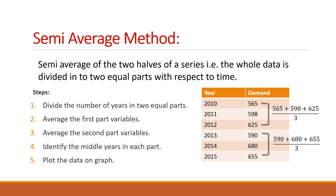Next, we have to identify the middle years of each part. In the first part, the middle year is 2011 — that is, for 2010, 11, and 12, the middle year is 2011. In the second part, the middle year is 2014 — that is, for 2013, 14, and 15, the middle year is 2014. Then we have to plot the data on the graph. This example is explained in the next slide.